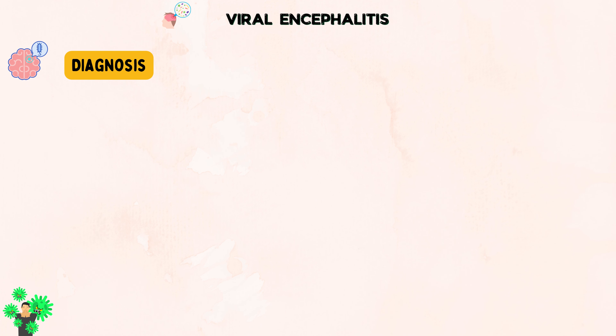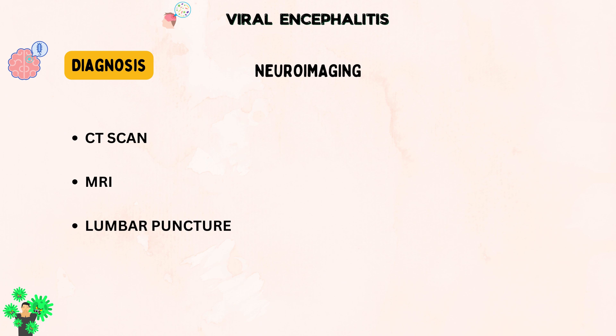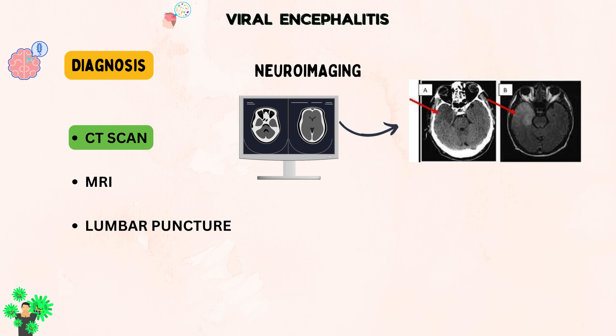Now let's discuss the diagnostic screening of viral encephalitis. Neuroimaging, like CT scans or MRI, and a lumbar puncture are crucial for diagnosing viral encephalitis. These tests help check for increased pressure in the brain and rule out certain risks before doing an LP. CT scans can reveal abnormal areas in the temporal lobes, especially when herpes simplex virus is involved, and these changes typically show up a few days after the infection starts.